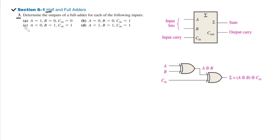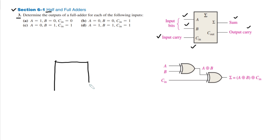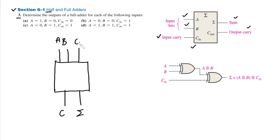We have different input combinations in parts a, b, c, and d, and we have to determine the output. As you can clearly see in the figure, a full adder has three inputs: the first input bit, the second input bit, and the input carry — which is a carry bit from the previous adder. Based on these, it gives us a sum and an output carry. Here we have three inputs and two outputs: the carry and the sum, where the inputs are A, B, and input carry.